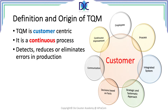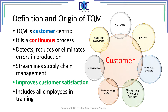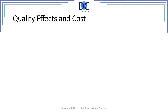In TQM, continuous improvement is very important. TQM is customer-centric; it's a continuous process that detects, reduces, or eliminates errors in production, streamlines supply chain management, improves customer satisfaction, and includes all employees in training and participation.